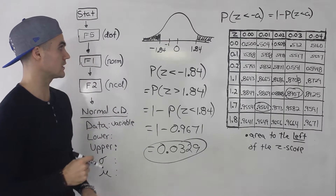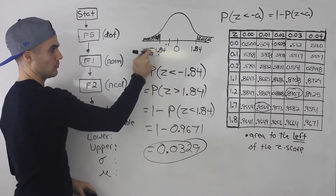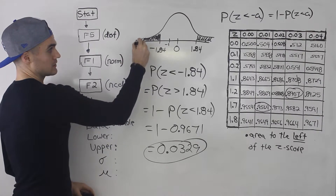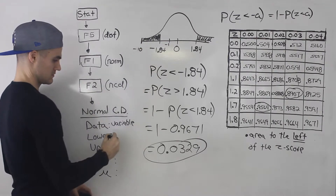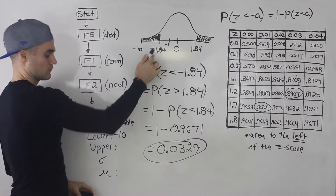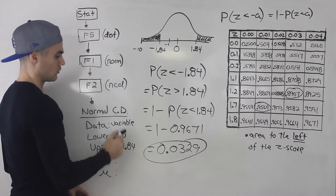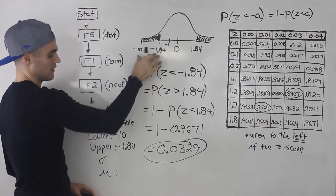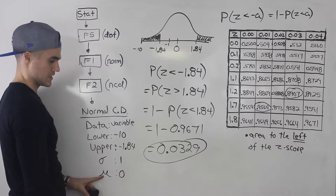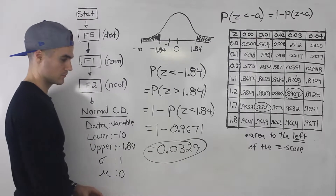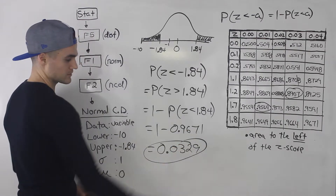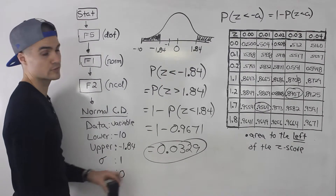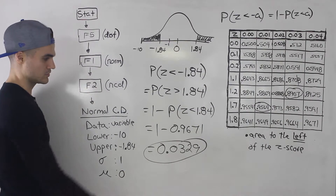Now, what if you were to do the same question using the calculator? We're still finding the probability that z is less than negative 1.84. You go through the same sequence using a normal distribution. The lower bound is negative infinity — you can just use negative 10. The upper bound is negative 1.84. The standard deviation is 1 and the mean is 0. When you input this, you get approximately 0.03288, which rounds to 0.0329 — the same answer. With the calculator, you don't have to rearrange anything.